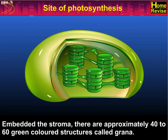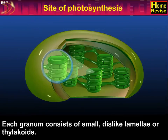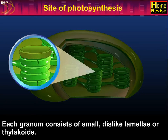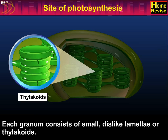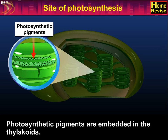Embedded in the stroma, there are approximately 40 to 60 green colored structures called grana. Each grana consists of small disc-like lamellae or thylakoids. Photosynthetic pigments are embedded in the thylakoids.